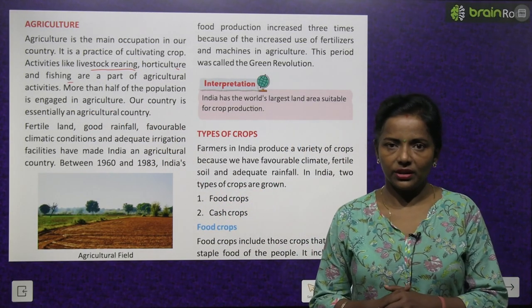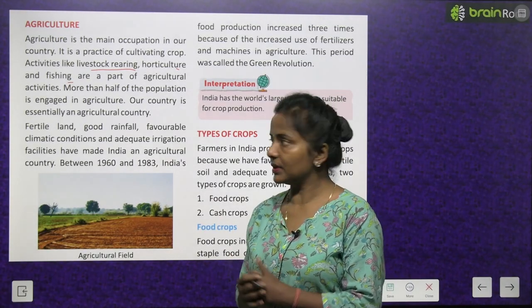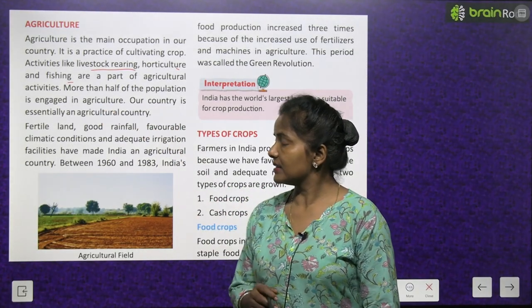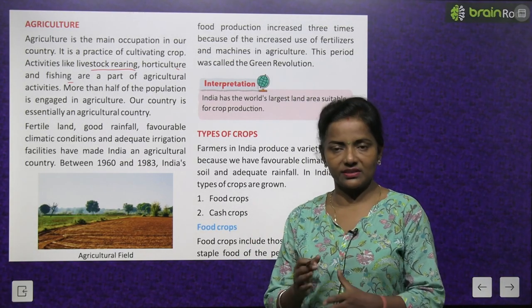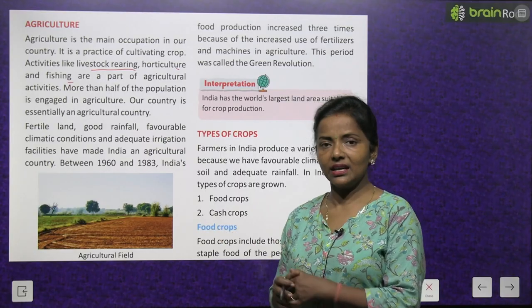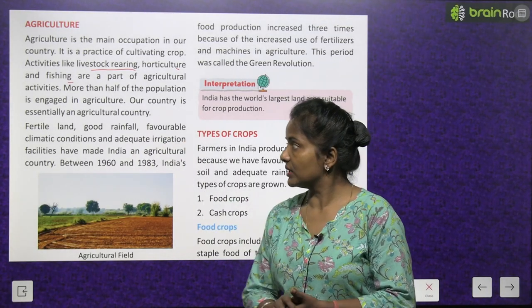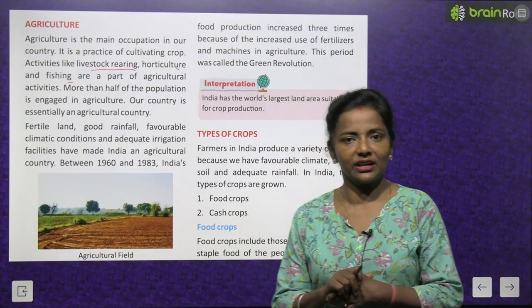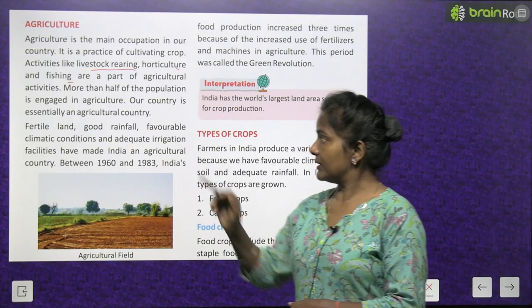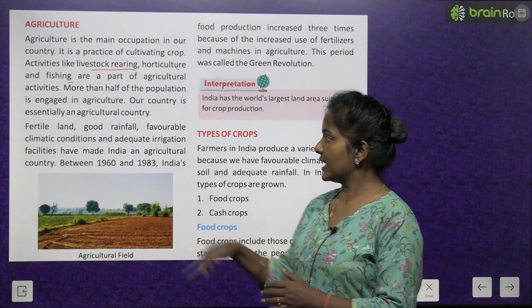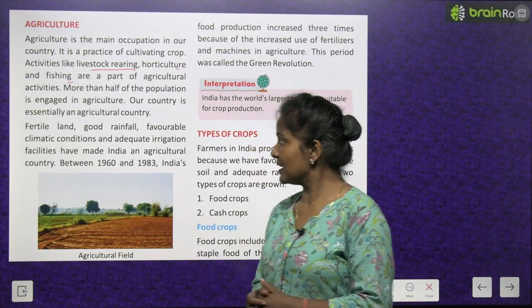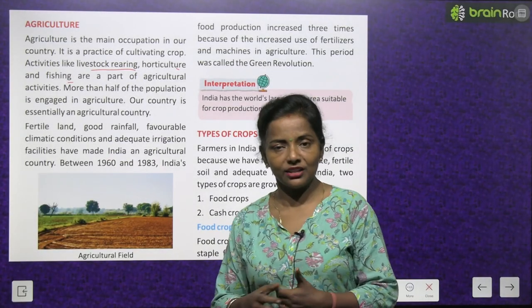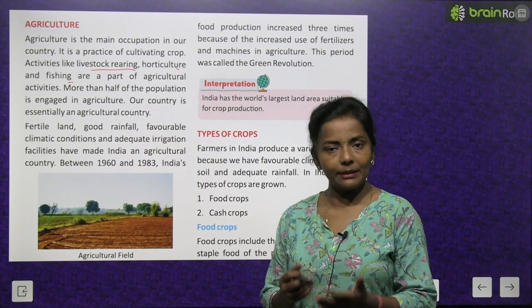More than half of the population is engaged in agriculture. Our country is essentially an agricultural country — a krishi pradhan desh. Fertile land, good rainfall, favorable climatic conditions and adequate irrigation facilities have made India an agricultural country.